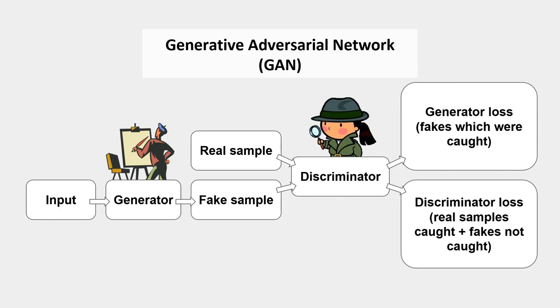As we were thinking of how to forge Monet's paintings, we came across a deep learning technique called Generative Adversarial Networks, or GANs for short. In GANs, there are two competing networks, learning as they try to undo each other.